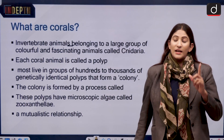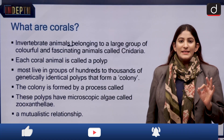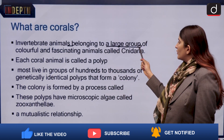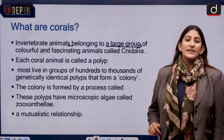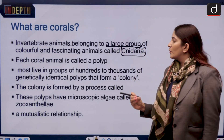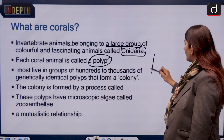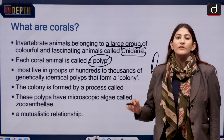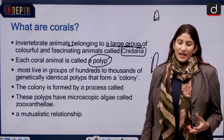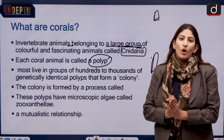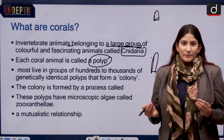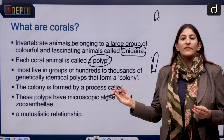Let's start with corals. What are corals? These are invertebrate animals belonging to a large group of colorful and fascinating animals known as Cnidaria. Each coral animal is known as a polyp, and these polyps do not live individually — they live in colonies. The colony formation is known as budding.